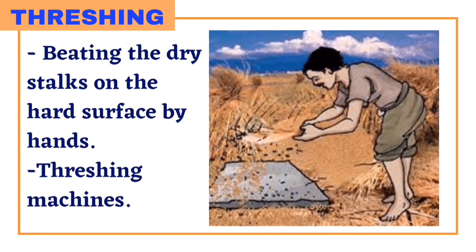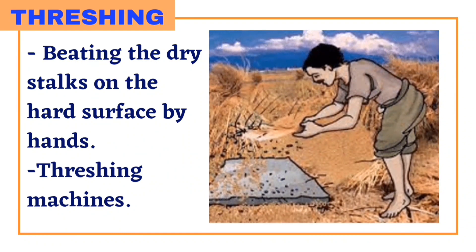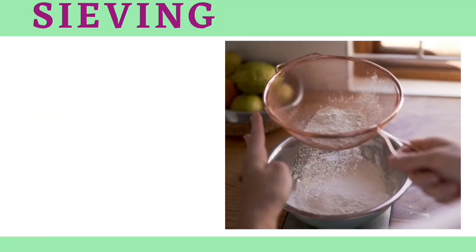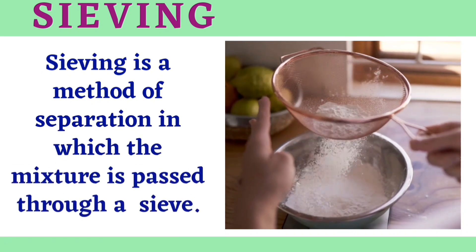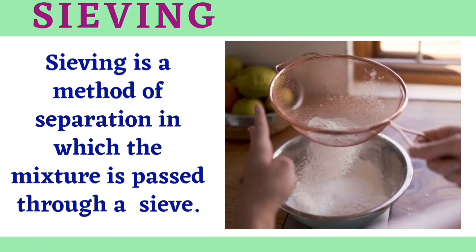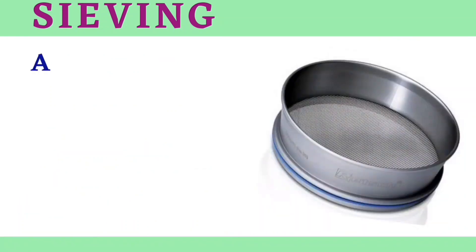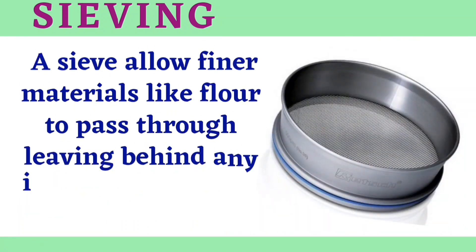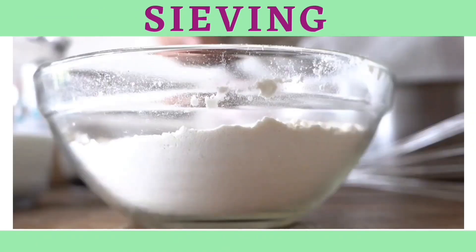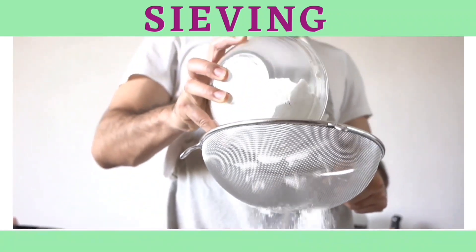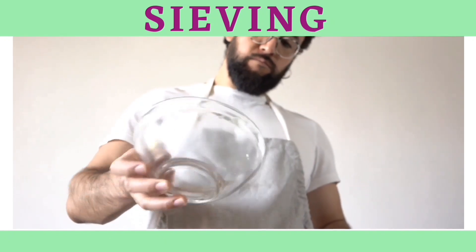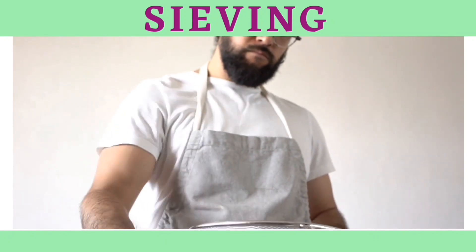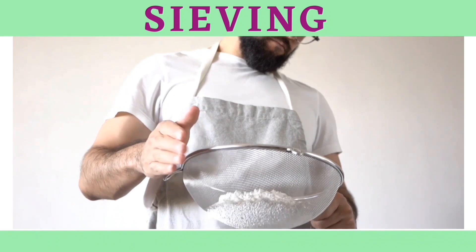Sieving is a simple, convenient, and time-saving process through which particles of different sizes can be separated with the help of a sieve. A sieve is a simple device with small pores that allow finer material to pass through. Impurities which are larger in size collect on the sieve, while finer particles flow through and can be collected below.